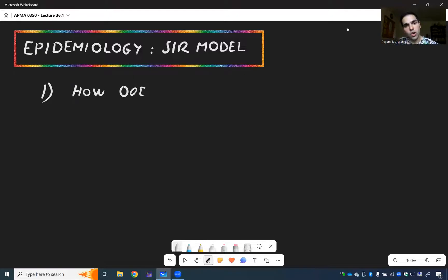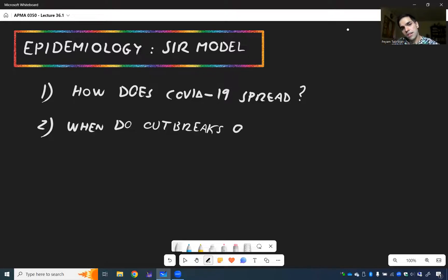So how does COVID-19 spread? Second of all, when do outbreaks occur? So when do outbreaks occur and also how to manage them?